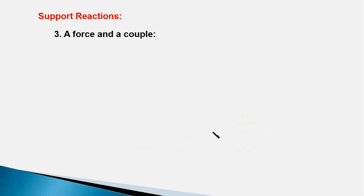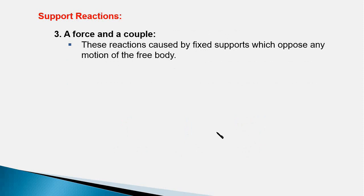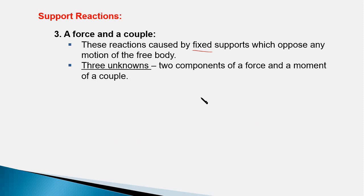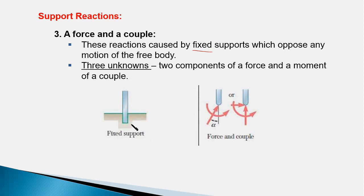The third category of support reactions is a force along with a couple, and these kinds of reactions are caused by fixed supports, which oppose motion in any direction — whether translation or rotation. So there are three unknowns involved: two components of a force and a moment of a couple. Examples include a pole fixed to the ground or fixed to a wall. In such cases there is an unknown force of unknown direction and magnitude, usually shown with its x and y components along with a counterclockwise moment.